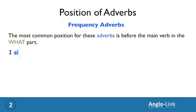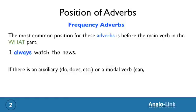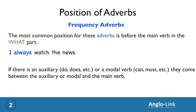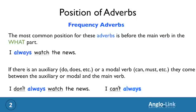For example: 'I always watch the news.' Now, if there is an auxiliary like do, does, don't, or doesn't, or a modal verb like can, must, etc., the adverb of frequency comes between the auxiliary or the modal and the main verb. For example: 'I don't always watch the news.' Or: 'I can't always watch the news.'